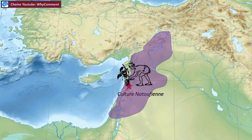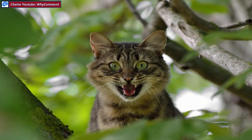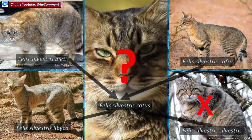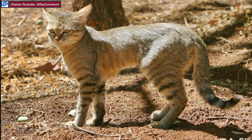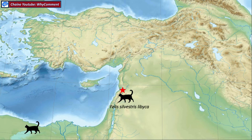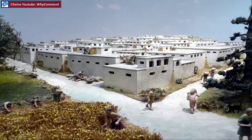Comment cette relation entre un animal très territorial, de nature très indépendante, qui normalement ne cherche pas la compagnie des hommes, a-t-elle pu être possible ? L'étude génétique montre que ce n'est pas le chat sauvage d'Europe, Felis silvestris silvestris, qui a été domestiqué — on ne l'a jamais trouvé ailleurs qu'en Europe. Il y a 10 000 ans, le chat sauvage d'Afrique du Nord, le chat ganté, qui était déjà présent au Moyen-Orient dans le croissant fertile, a commencé à s'approcher des habitations humaines.